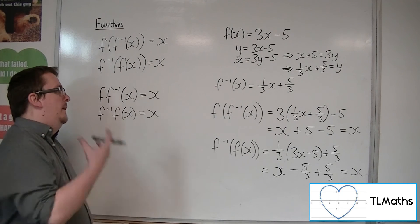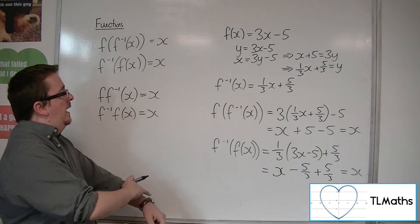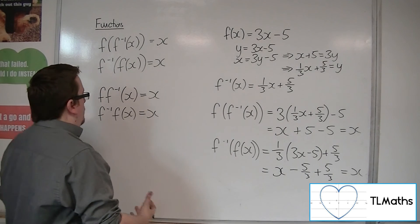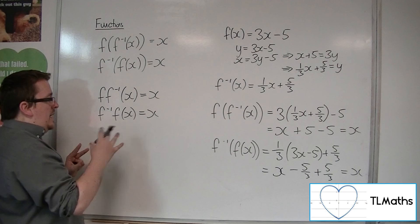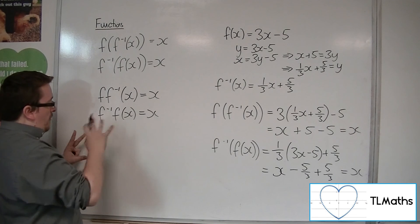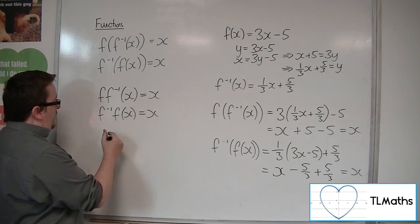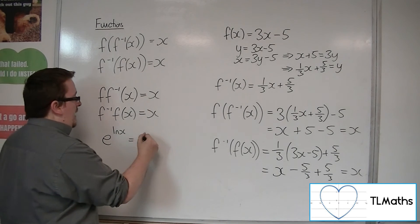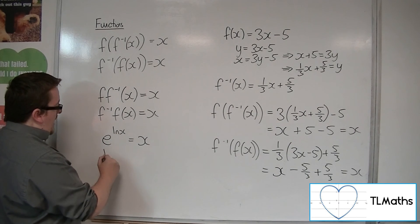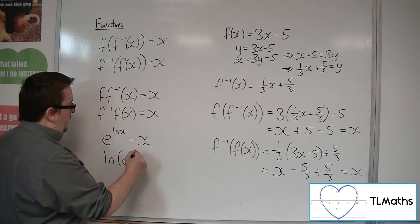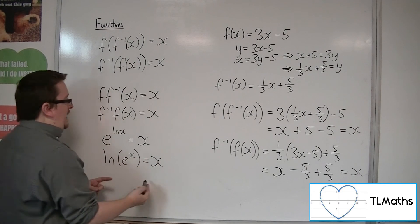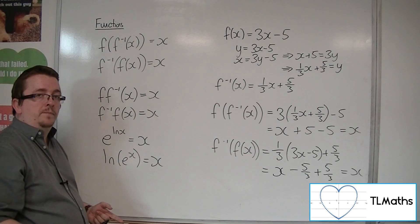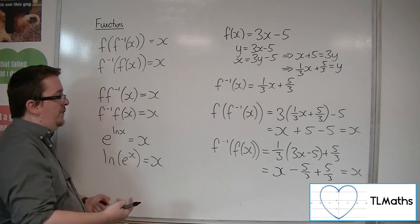From learning about e and ln, e and ln are inverse functions of one another, because e to the ln of x is just x. And ln of e to the x is x, and so e and ln are inverse functions of one another. That shows this to be true.